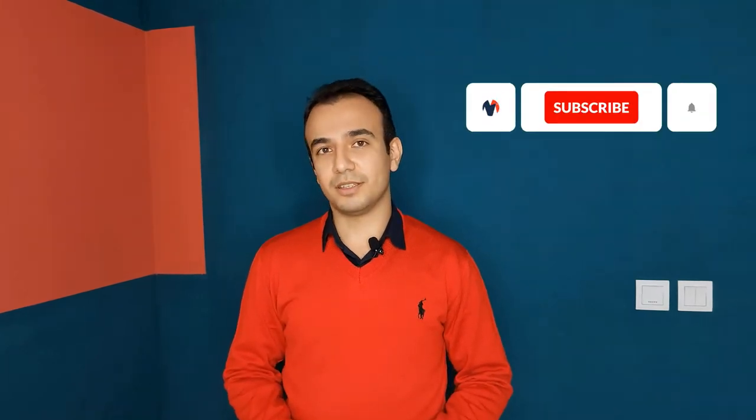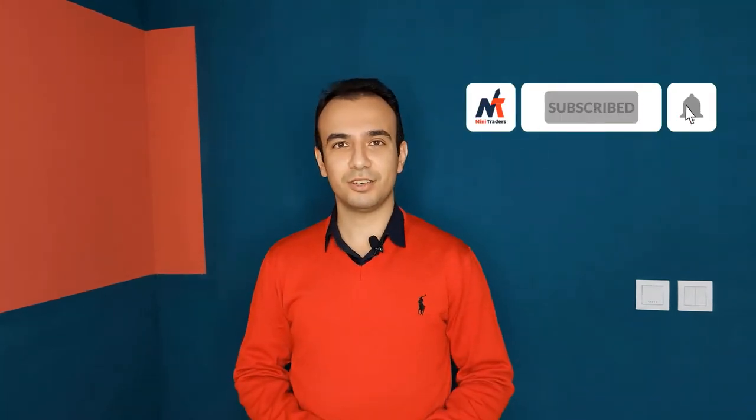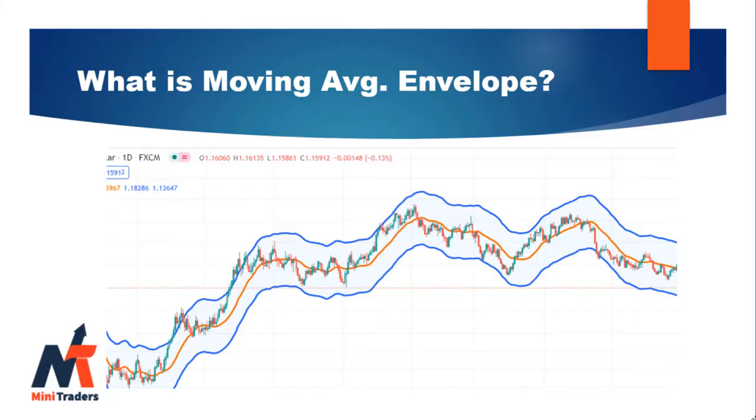In this video, we are going to talk about moving average envelopes and how to use them in designing our strategy. As a start, let's answer this question: what's an envelope? A moving average envelope is made up of two moving averages with the same period, placed above and below the main moving average with a percentage of difference.